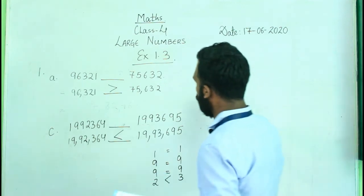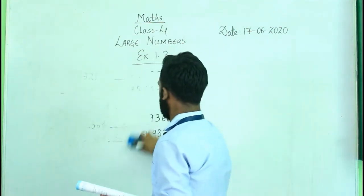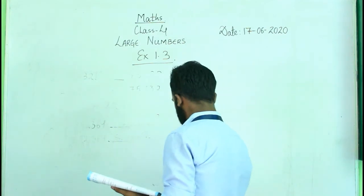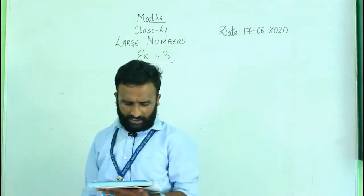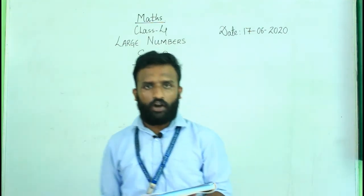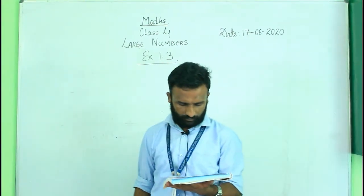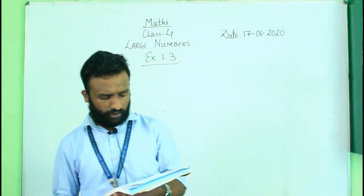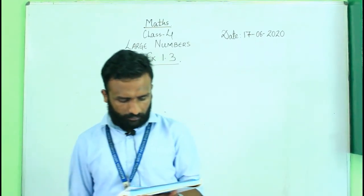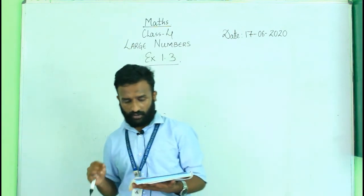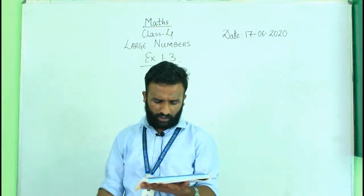Now let's go to the next question. In the next question it says: write the following numbers in descending order. Descending order means writing numbers from bigger to small — from the largest to the smallest. You have done this in lower classes as well.